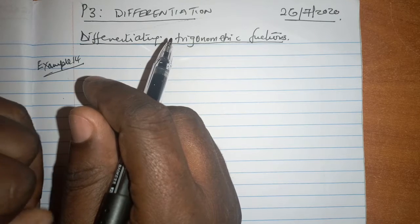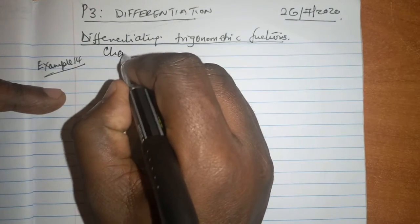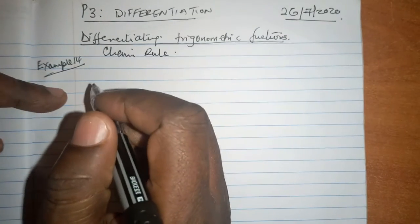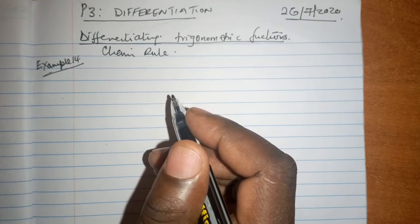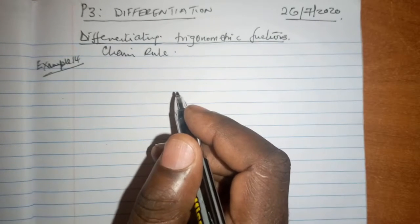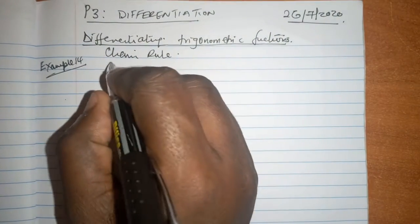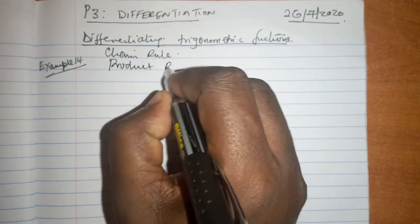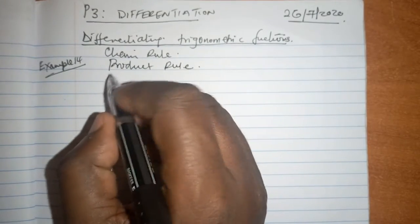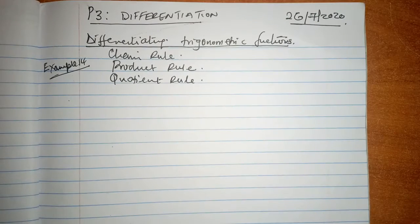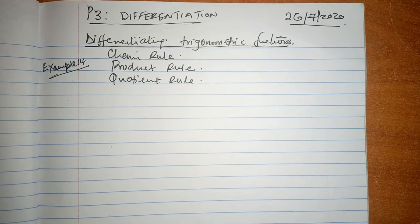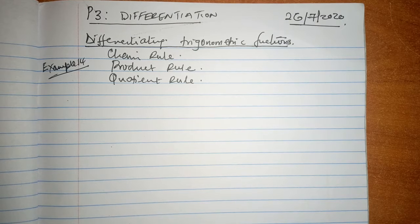Just to recap, we have understood the chain rule. We have learnt the chain rule, and of course chain rule is one of the rules that we have learnt. We have also learnt the product rule and the quotient rule. It is important to exactly understand what we have talked about so far.